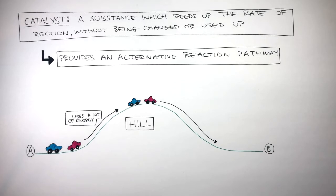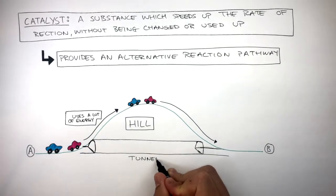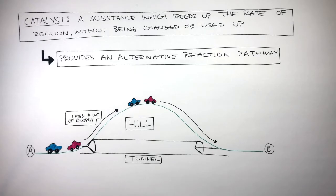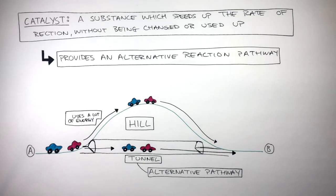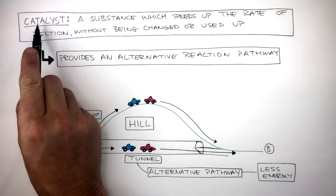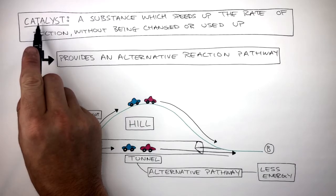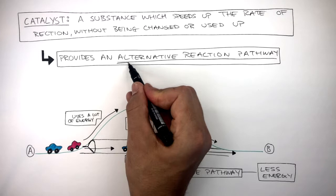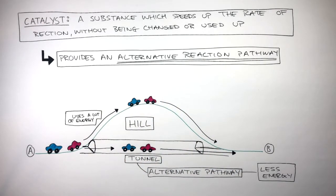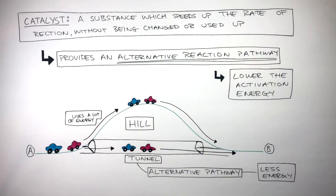To allow the cars with less energy to get from point A to point B so more cars can make the journey, a tunnel is built going under the hill. This tunnel has provided an alternative pathway, allowing the cars with less energy stored to make the journey. This analogy is very effective for explaining how catalysts work, as catalysts essentially do the same thing — they provide an alternative reaction pathway, which is a different route for the reacting particles to take. And this alternative reaction pathway lowers the activation energy, allowing a higher proportion of the reacting particles to successfully collide when they do collide.